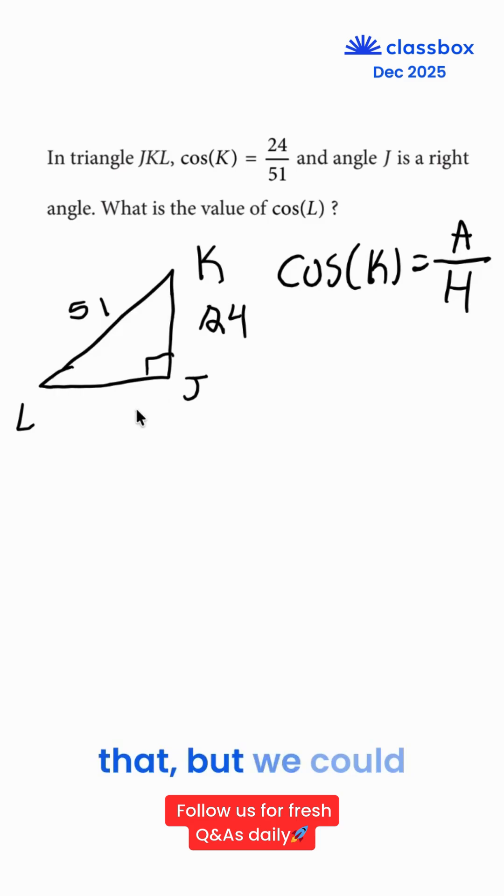We don't know that, but we could simply find that by using the Pythagorean theorem, which states A squared plus B squared is equal to C squared. We could label any of these as A or B. It doesn't really matter, but our C is always our hypotenuse.